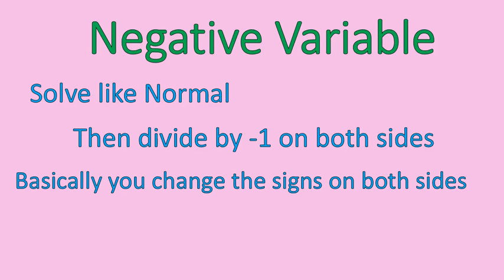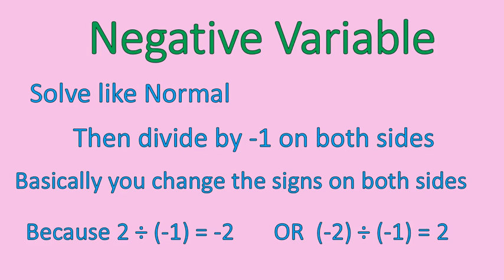And the rule basically for dividing by 1 is essentially that you're changing the sign. Because 2 divided by negative 1 would give you negative 2, or negative 2 divided by negative 1 would give you positive 2. So if you divide both sides of the equation by negative 1, or you could multiply both sides times negative 1, it will do the same thing. It will just change the signs of the terms on both sides of the equation.